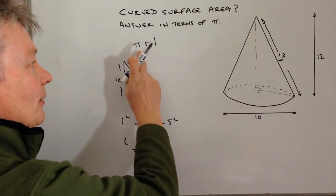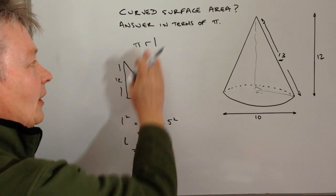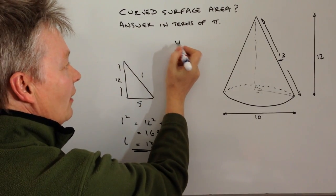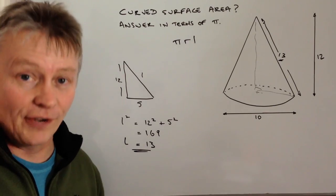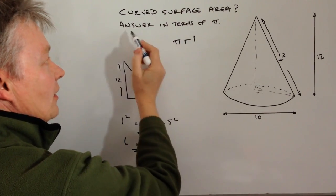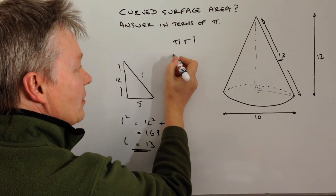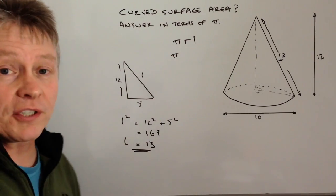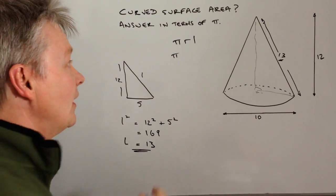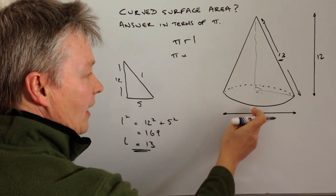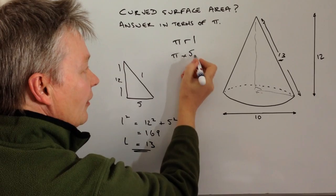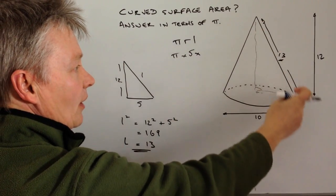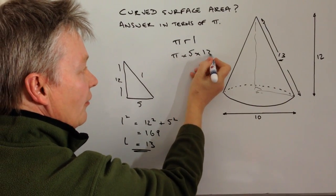Now we can put this into our formula. Our formula is πRL. We've been asked to leave the answer in terms of π, so I'm going to multiply it by the radius, which is 5, and by the slant height, which is 13.